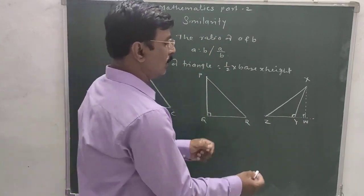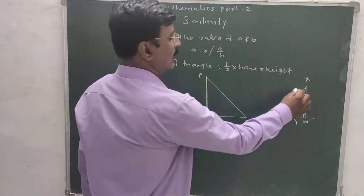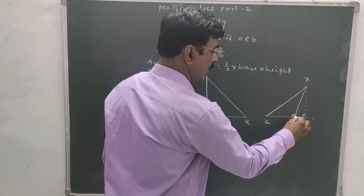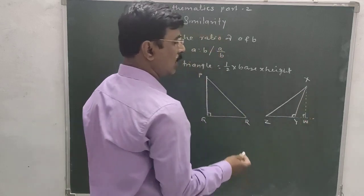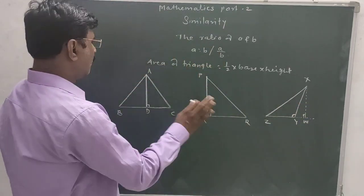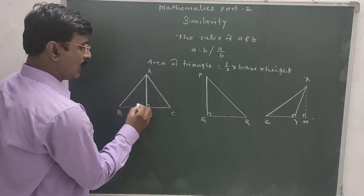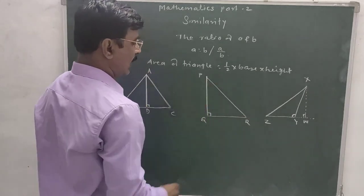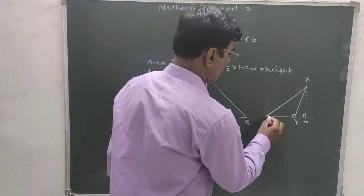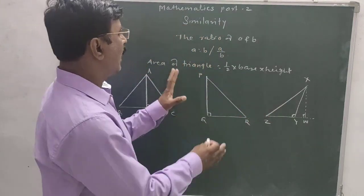In the obtuse triangle, ZY is the base and XW is the height. To summarize: in a right angle triangle PQR, QR is the base and PQ is the height; in an obtuse triangle, ZY is the base and XW is the height.